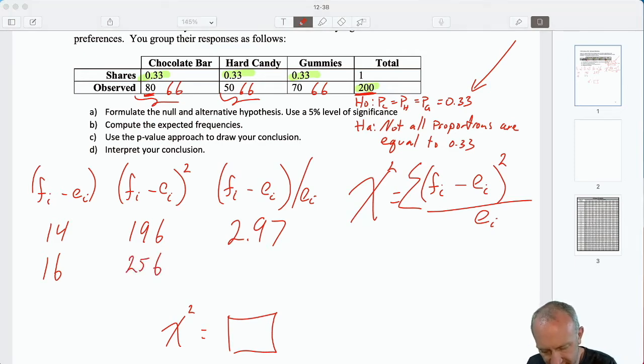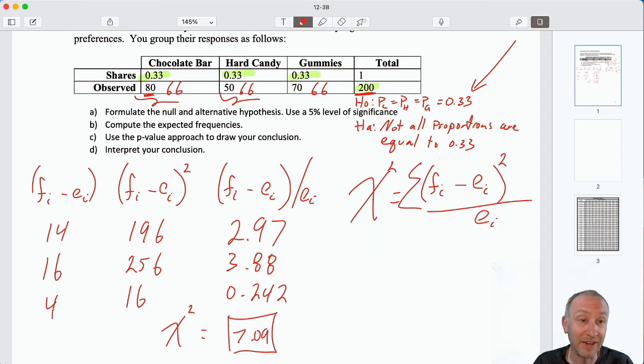And finally, the next one, 70 minus 66, divided by 66. And now I add those up, and that gives me my test statistic of 7.09.